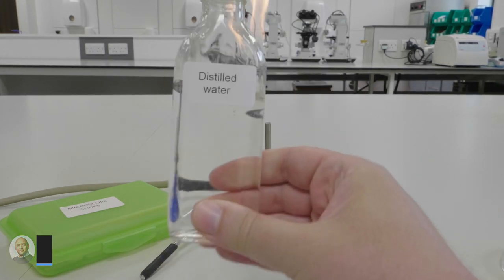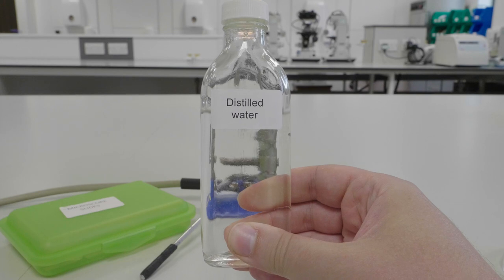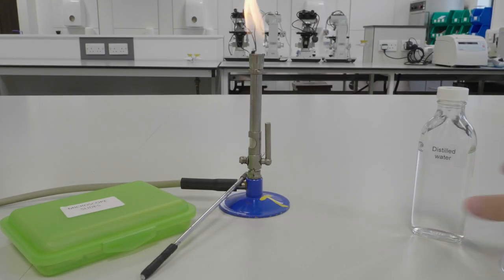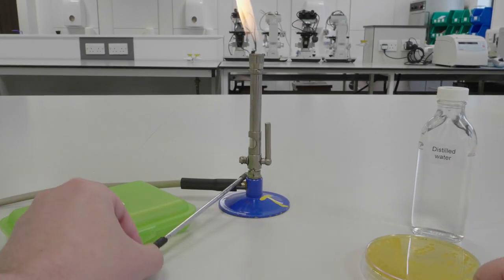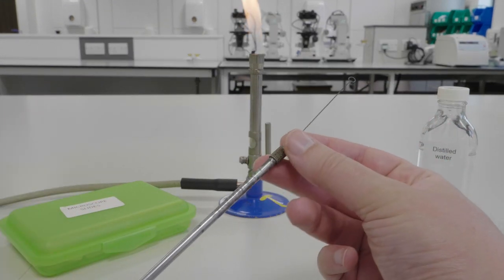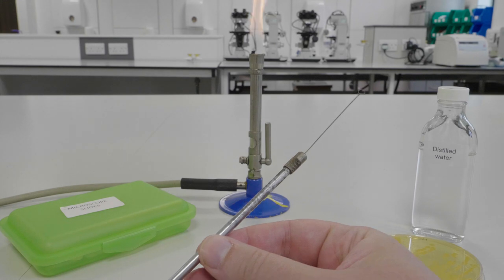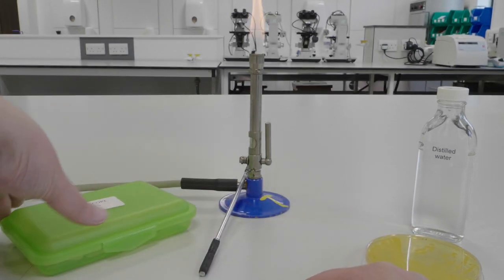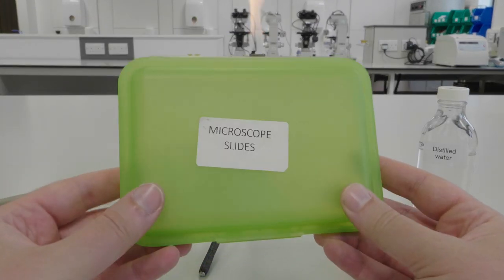For this method you will need a bacterial culture, some distilled water which can be found in the box by the sink, an inoculating loop with the wire straightened by running between your thumb and forefinger, and a box of microscope slides.